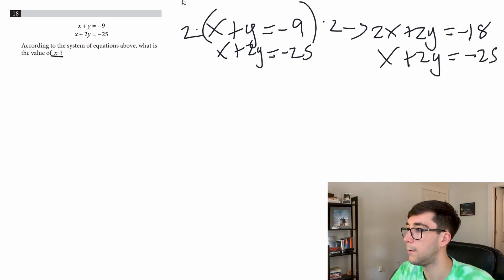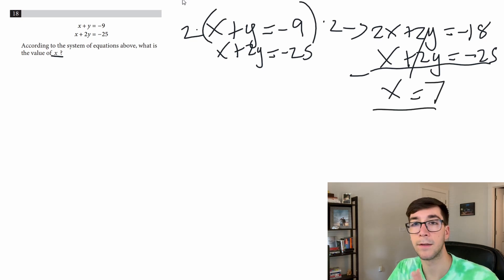Now because there's a 2y we can subtract here. We'll get x, 2y minus 2y is zero so the y's are gone, equals negative 18 minus negative 25 is negative 7. So we got the same answer just a different way. So substitution, elimination - sometimes you can do both, you can pick whichever one you want. Sometimes you have to do elimination or substitution so it's good to know both methods.